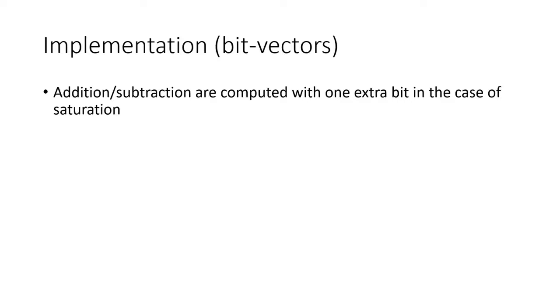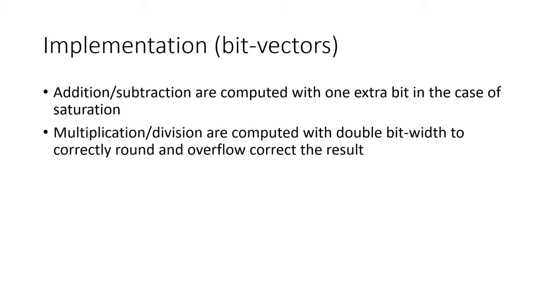We compute using one extra bit in the case of saturating addition and subtraction. Extra precision is not needed for these operations for wraparound because that is the behavior of the underlying bit vector theory. Multiplication and division must be computed in a double bit width. This allows us to check all fractional bits as if the result were computed using real arithmetic and check for all overflowing results. Because wraparound is the effective overflow mode in two's complement, this almost comes for free from the theory. However, as mentioned previously, an inconvenient rounding operation may make the wrapped result incorrect.